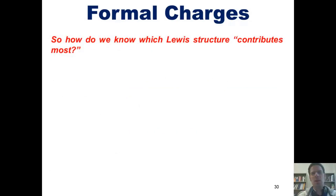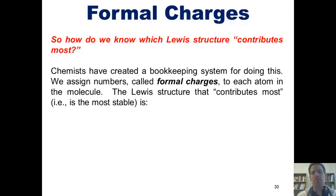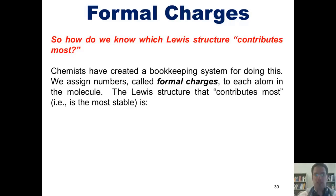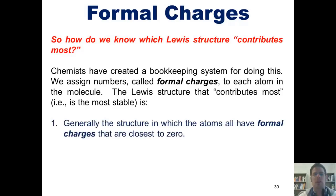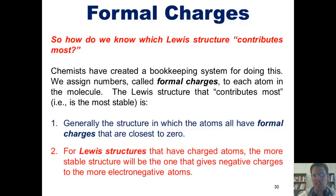We say that these two structures are both contributors to the actual structure of CO2. However, the more stable of these two structures is the one that contributes more. So how do we know which Lewis structure contributes more or is the most stable? Chemists have created a bookkeeping system for doing this. We assign numbers called formal charges to each atom in the molecule. The Lewis structure that contributes most — that is, that's the most stable — is, generally speaking, the structure in which all of the atoms have formal charges closest to zero. For Lewis structures that have charged atoms, the more stable structure will be the one that gives negative formal charges to the most electronegative atoms.